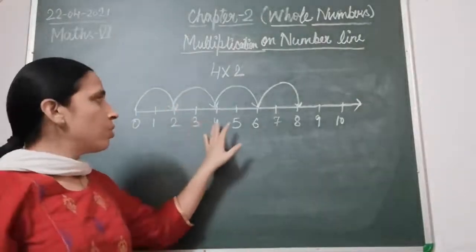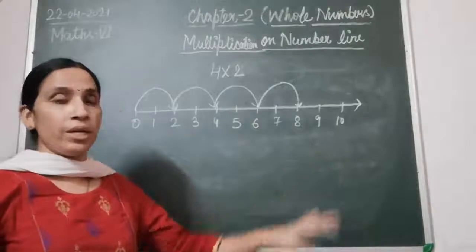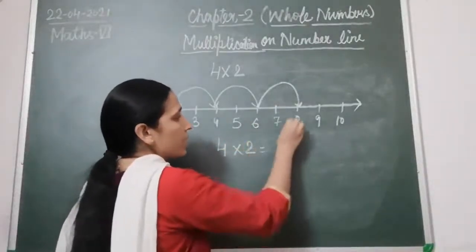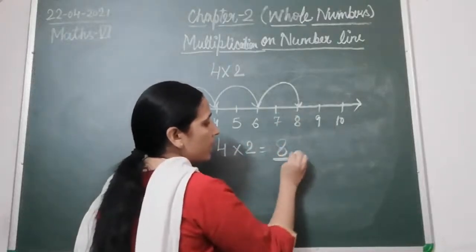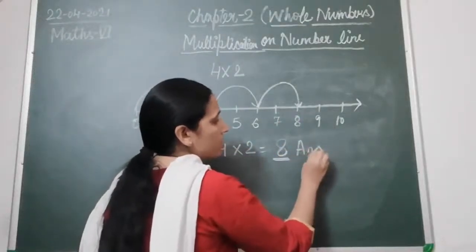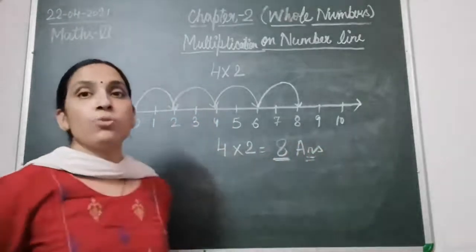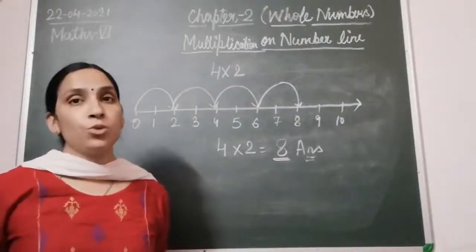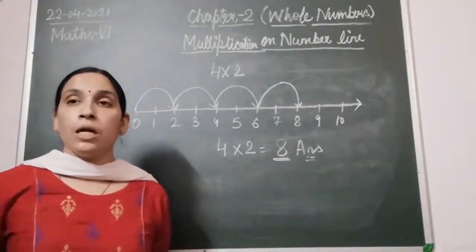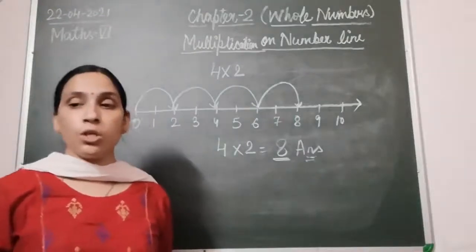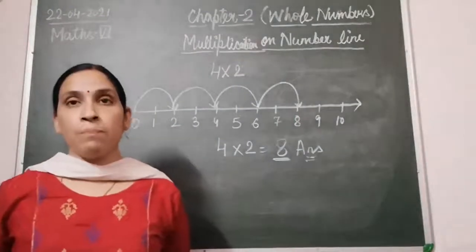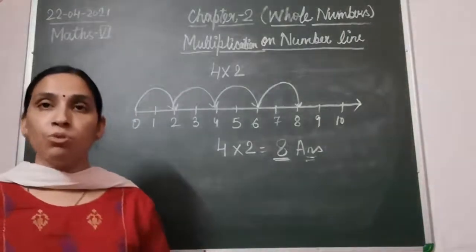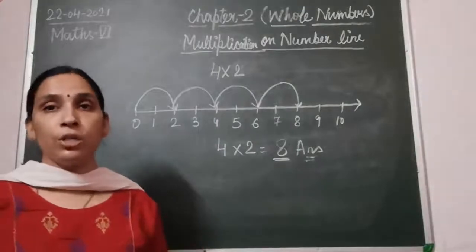Each jump contains two points: zero to two, two to four, four to six, and six to eight. You finally reach position eight, so the answer is eight. That is multiplication on the number line. You will find these questions in your book. Draw a number line for each question and do them — they will help you understand the basic concept of multiplication on the number line.